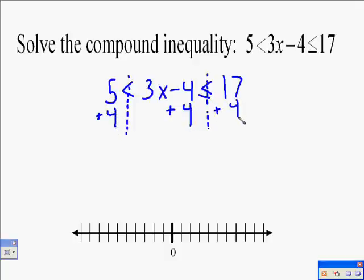So in this case, we added 4 to the middle to get 3x by itself, and we then added 4 to the 5 to get 9, and we added 4 to the 17, which is going to become 21.